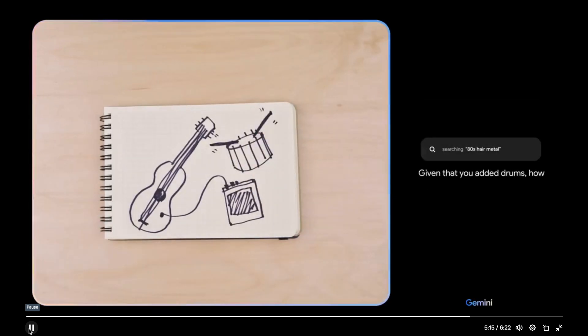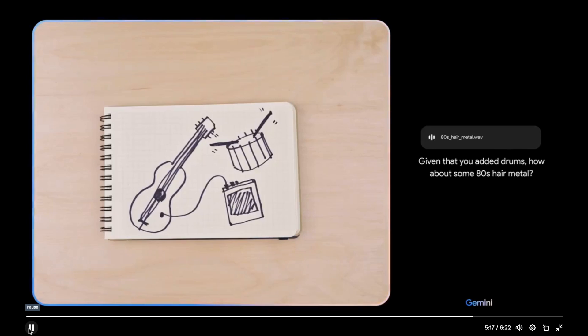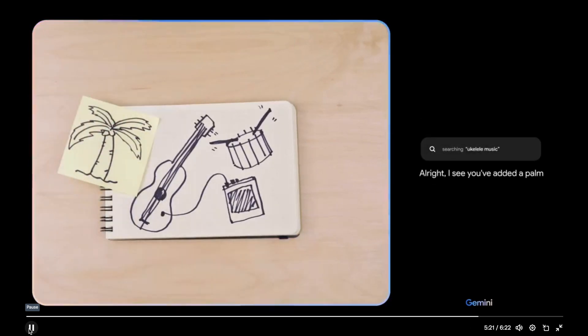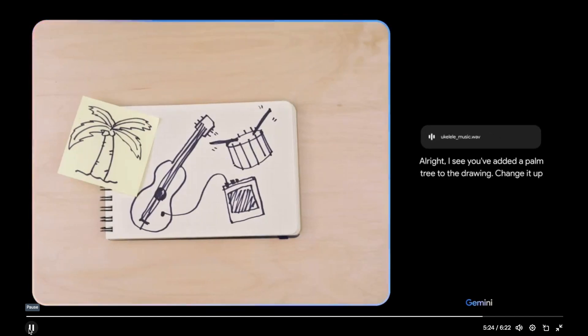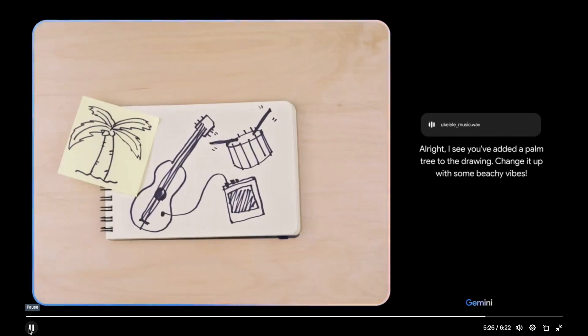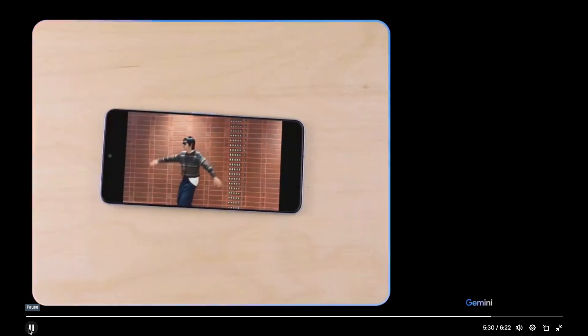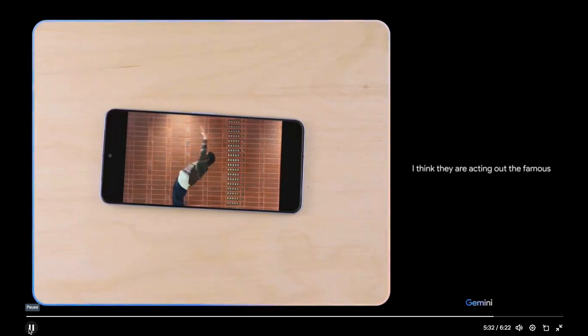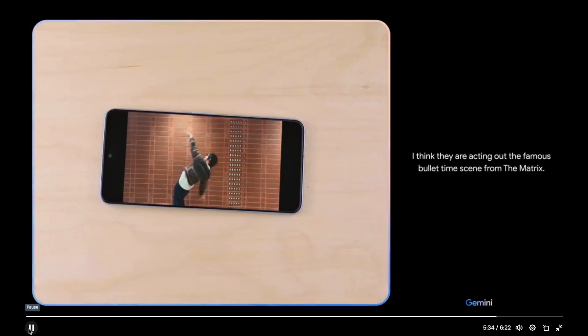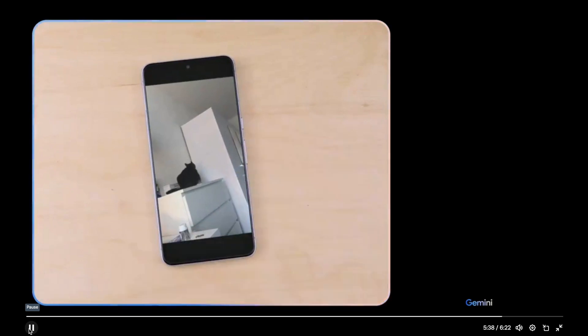Given that you added drums, how about some 80s hair metal? All right, I see you've added a palm tree to the drawing. Change it up with some beachy vibes. What movie are they acting out here? I think they are acting out the famous bullet time scene from The Matrix. Ooh, nice.